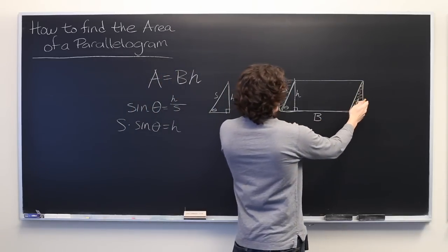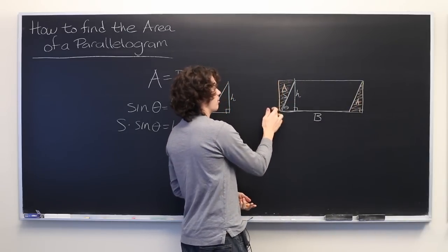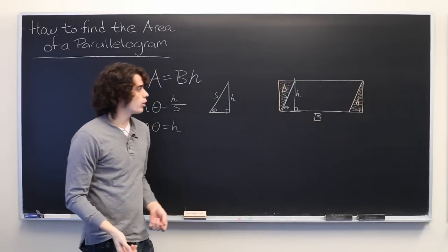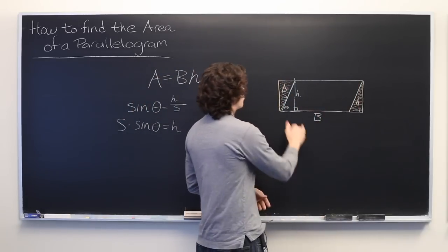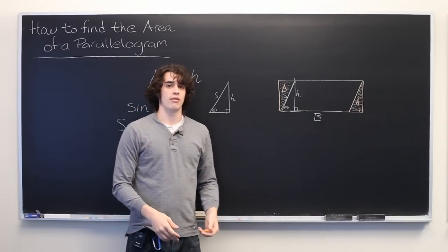And so if we know the area of these two triangles, then we should also probably be able to determine the area of the overall rectangle. Well, from there we can simply take the area of the rectangle and subtract the area of the triangles. And that way, we get the area of our parallelogram.